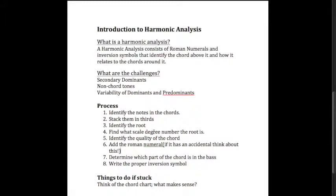Then we identify the quality of the chord. Well, D to F is a minor third, and F to A is a major third, so it's a minor chord. Then we add the Roman numeral, since it's the sixth scale degree and is minor, we write a lowercase 6. Then we determine which part of the chord is in the bass. If the F is in the bass, then that means that it's in first inversion, which means we put a 6. So for that chord, we put a 6-6.